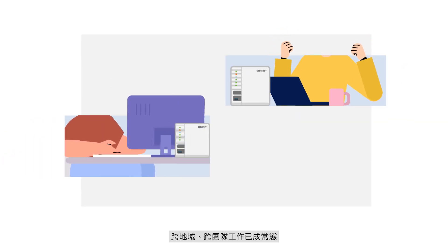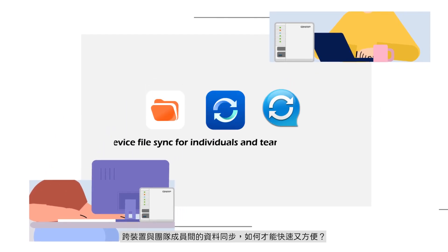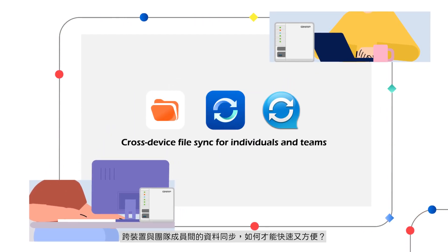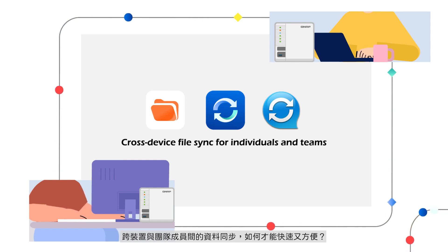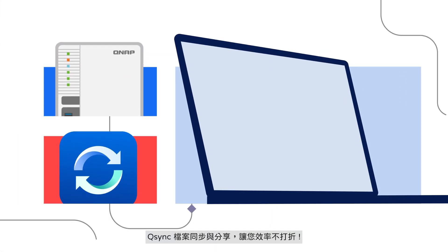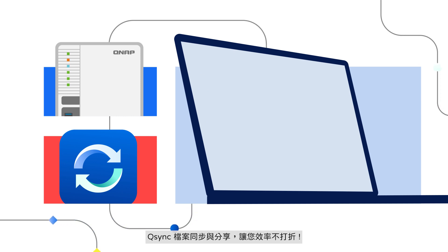Multi-site and remote teams have become increasingly common in the last few years. Many of these teams struggle with ensuring their files and data is synced and available on every device of each team member. Q-Sync, the efficient file sync app for QNAP NAS, is the ideal solution.